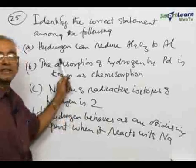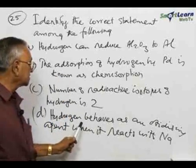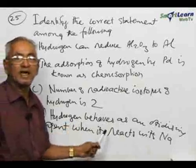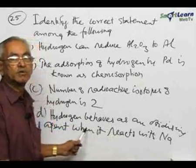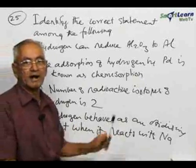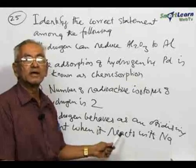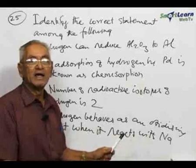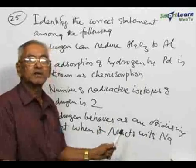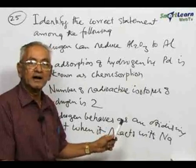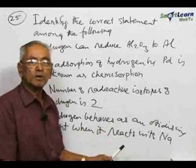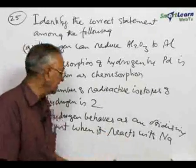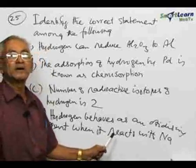Statements A, B, and C are not correct. Coming to statement D: hydrogen behaves as an oxidizing agent when it reacts with sodium to give rise to sodium hydride. What is actually happening is that hydrogen is being converted to the hydride ion, meaning an electron is added. A process in which an electron is added is known as reduction, and therefore hydrogen undergoes reduction. Therefore, this behaves as an oxidizing agent, and that statement is actually correct.